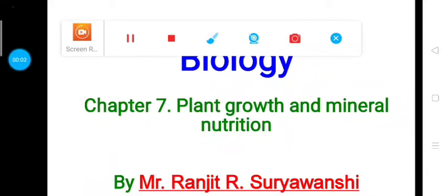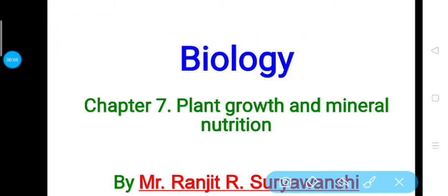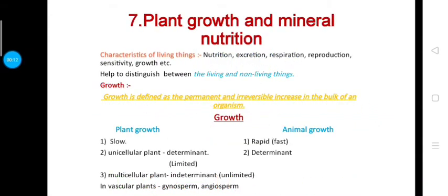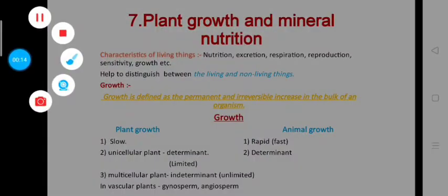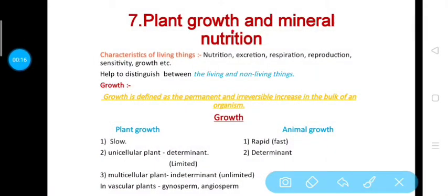Hello students, today we are going to study the seventh chapter of biology: Plant Growth and Mineral Nutrition. In this chapter we have to study two characteristics of living things — growth and nutrition. First of all, we should know how we can differentiate between living things and non-living things, as there are some specific characteristics or properties of living things.